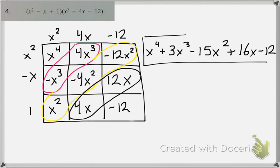So I'm left with x to the fourth plus 3x cubed minus 15x squared plus 16x minus 12. So you can see here that the box method really helps to keep your numbers organized and it makes combining like terms a lot easier. And that is all for today. Thank you.